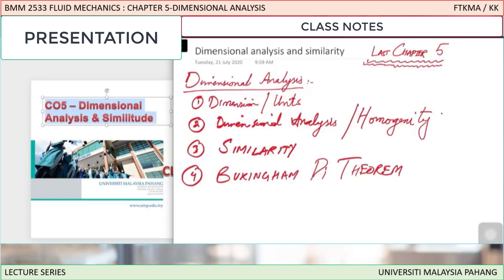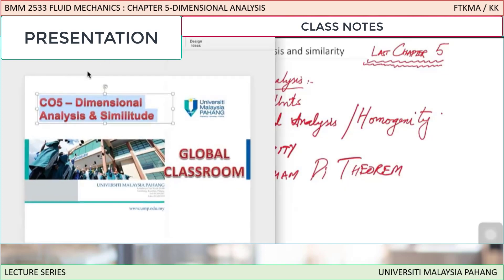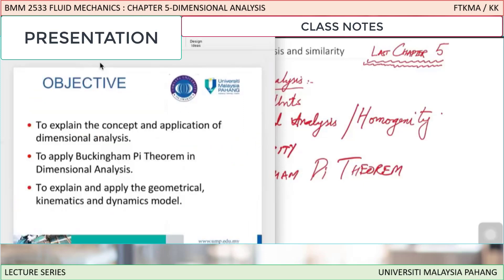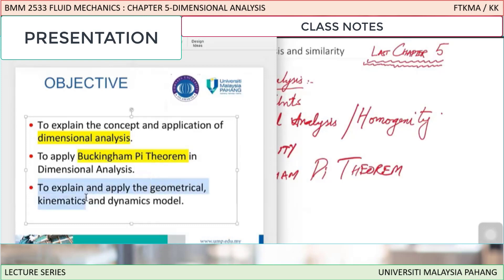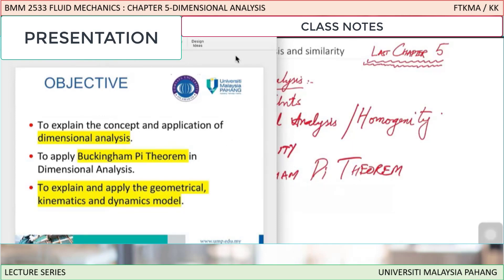We are going to start step by step — first with dimensions and units. The objective of this chapter is basically to explain the concept and applications of dimensional analysis, to learn Buckingham Pi theorem, and to explain and apply geometrical, kinematic, and dynamic similarity. These are more or less the objectives of chapter number five.